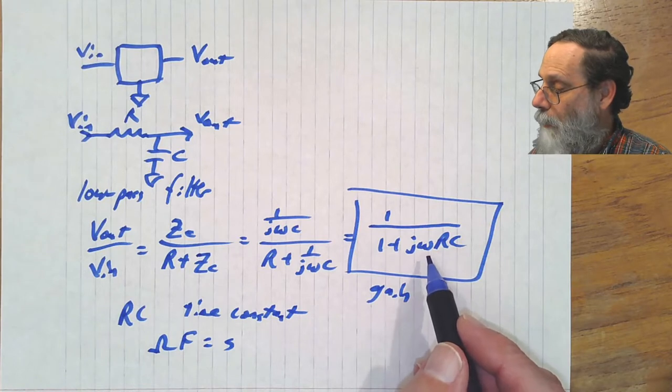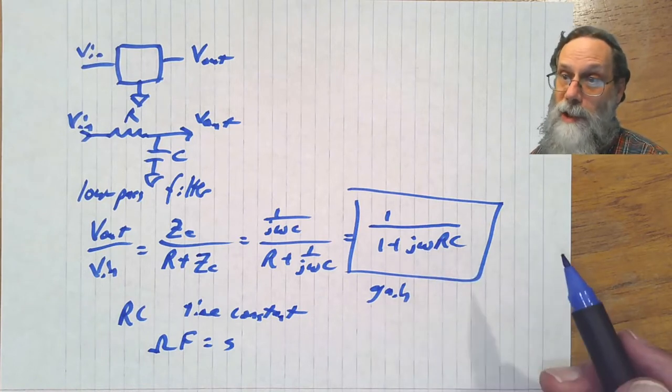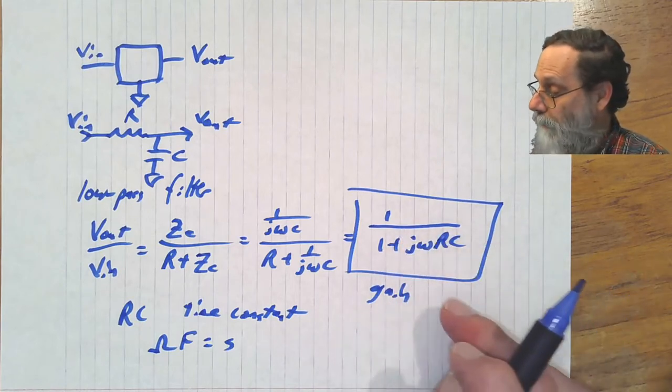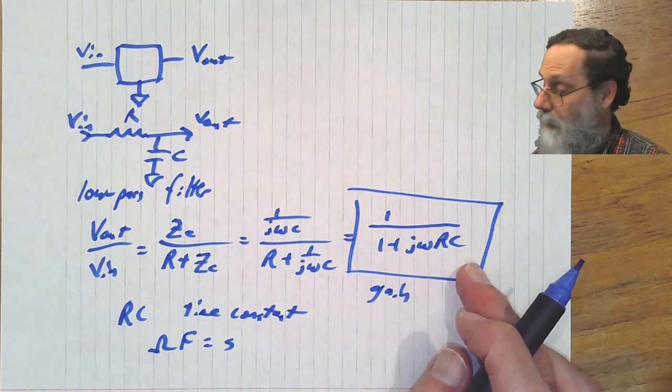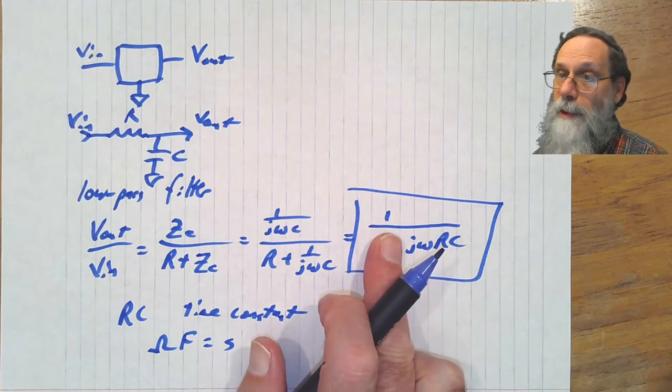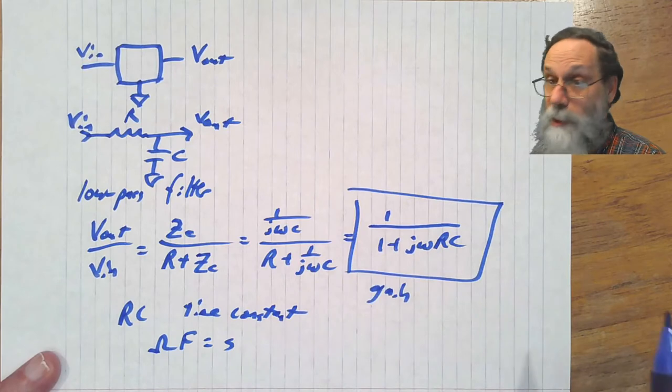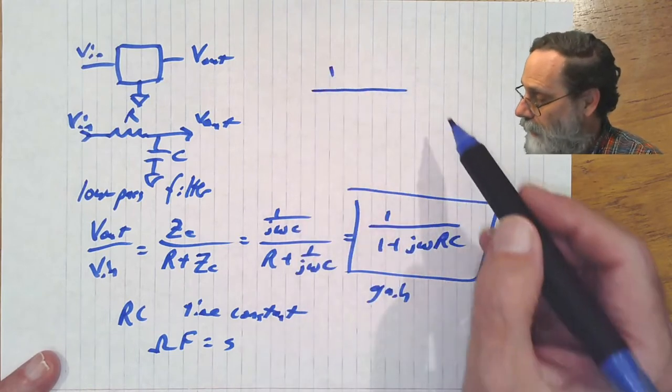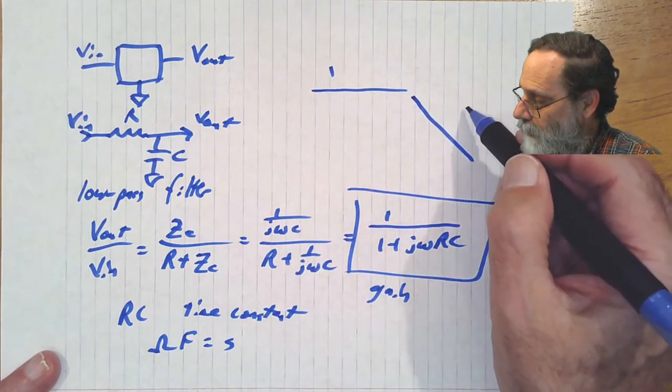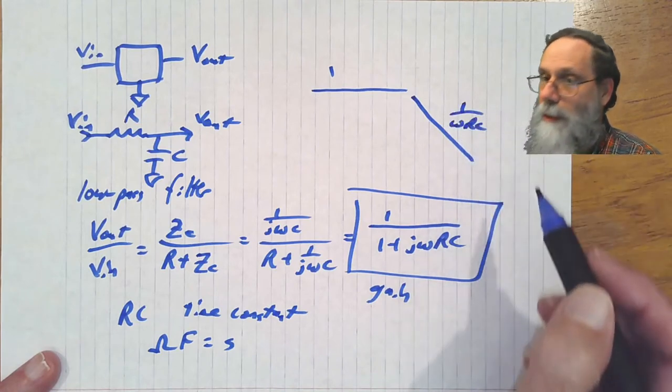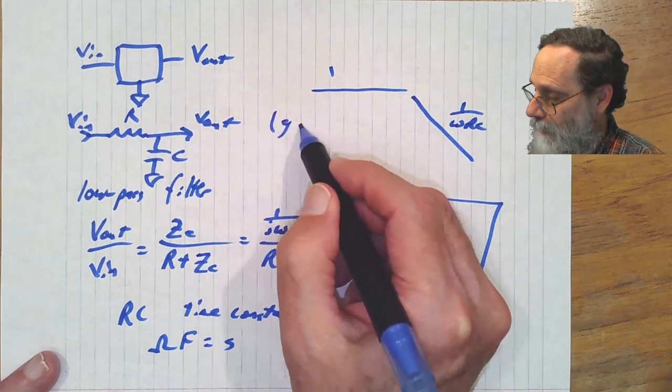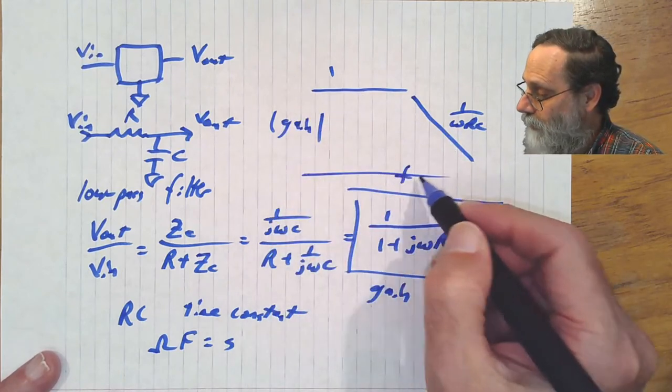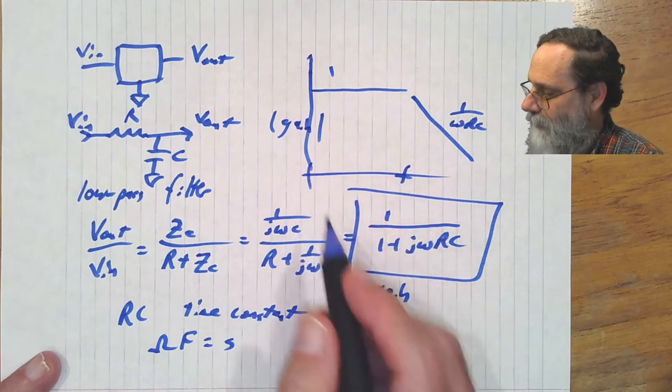If omega times RC is very small, much less than 1, then this term pretty much disappears, and we get that the gain is 1. If omega times RC is very large, then this 1 pretty much disappears, and we get 1 over jωRC. So what we're expecting to get as the magnitude of the gain is at low frequencies it's going to be 1, and at high frequencies it's going to be 1 over ωRC. Again, I'm looking at just the magnitude. So this is the magnitude of the gain. And I'm plotting this on a log-log scale with frequency down here and magnitude of gain on a log scale here.